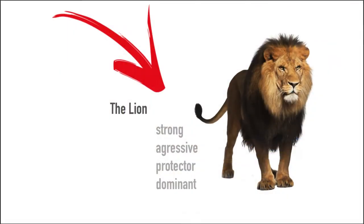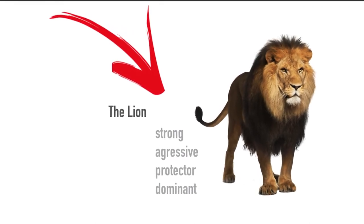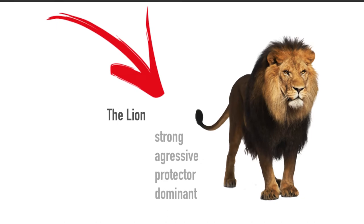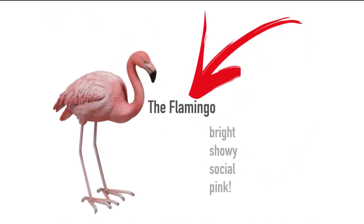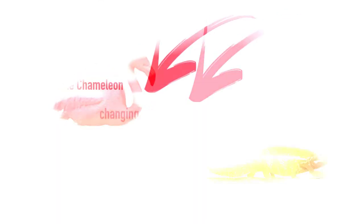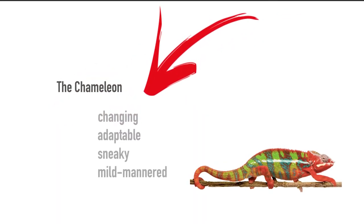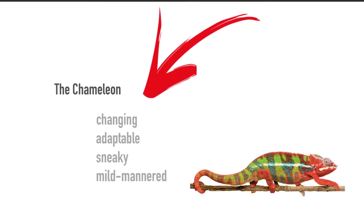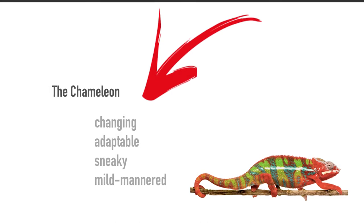These are the characteristics of a lion: very strong, very aggressive. A lion is a protector and dominant. Flamingo — you're bright, you're showy, you're social, you're pink. How many flamingos do I have? Chameleon — changing, adaptable, mild-mannered. Let's key in on that: adaptable. How many chameleons?